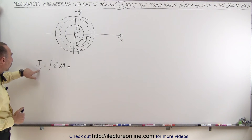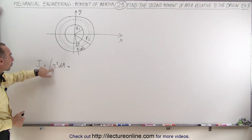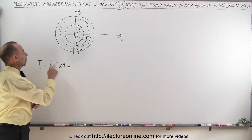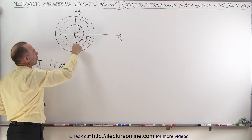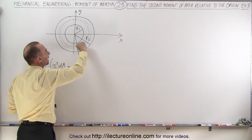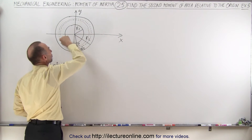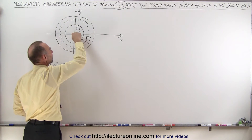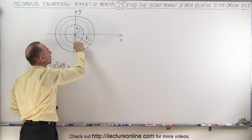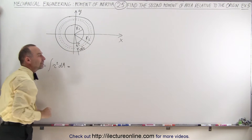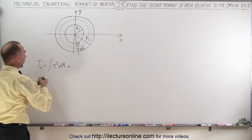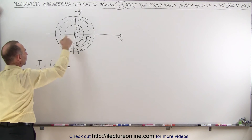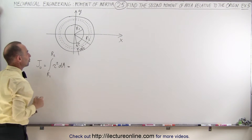We do that with respect to the origin and the equation is the integral of r squared dA, where r is simply the distance from the origin to the area element. We're going to take a thin strip all the way around at a distance r away from the origin with thickness dr, and integrate that from r1, the inner radius, to r2, the outer radius.